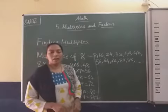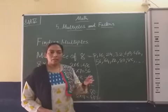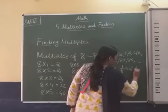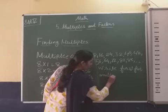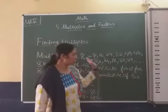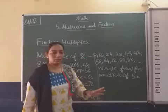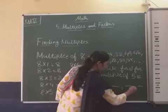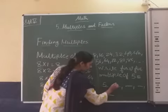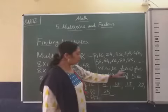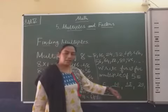For example, if asked to write the first 5 multiples of 5 — that means only the first 5, not continuous. So: 5, 10, 15, 20, and 25. We put a full stop because the question asks for only the first 5 multiples of 5.